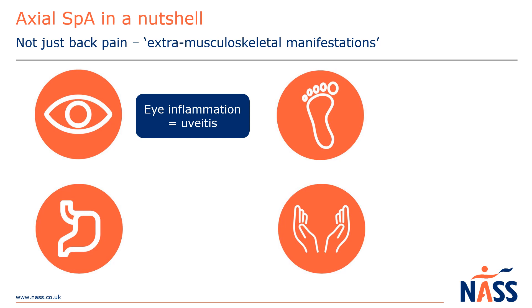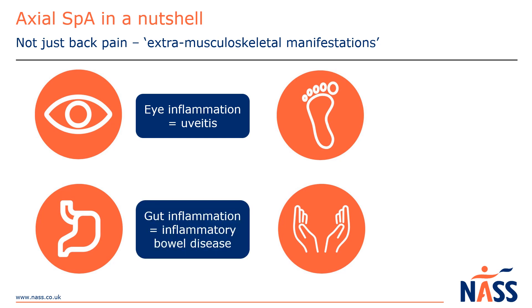Uveitis is treated with steroid eye drops, but it's vital that you see an ophthalmologist as soon as possible after your symptoms start. Axial SpA is also linked with inflammatory bowel disease, such as ulcerative colitis and Crohn's disease. Symptoms can include diarrhoea, stomach cramps, fatigue, loss of appetite, anaemia and mouth ulcers. It's important to discuss any of these symptoms with your doctor.